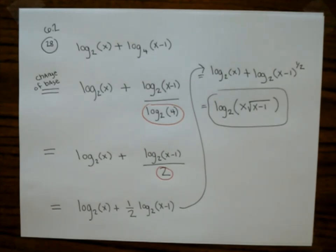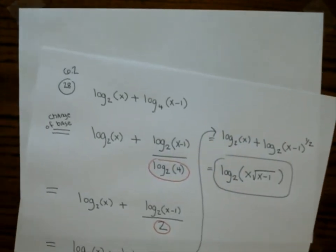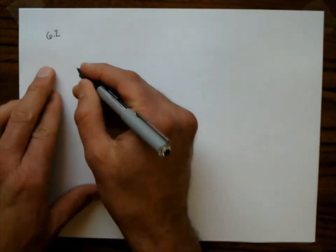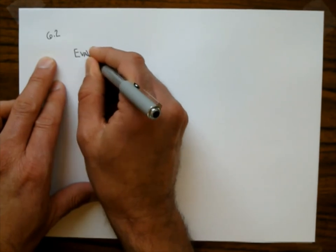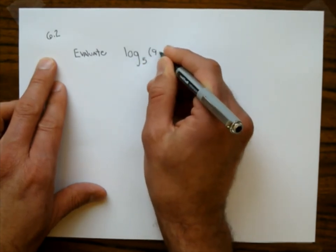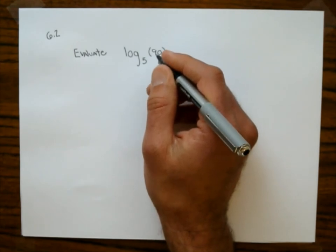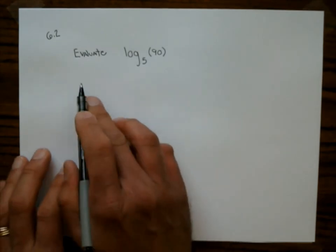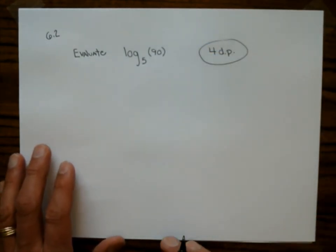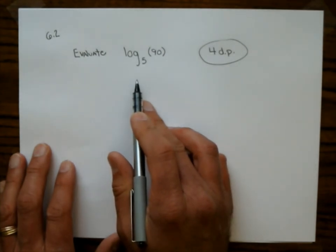From this point on, I'd like you to pause the video and try the problems on your own. Now we'll evaluate log base 5 of 90 using the change of base formula, rounding to 4 decimal places. I'll use natural log: ln(90) divided by ln(5). Pause the video and try it, then unpause to see the answer.